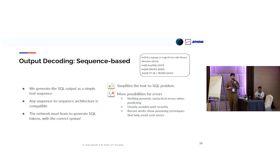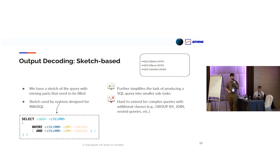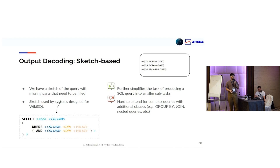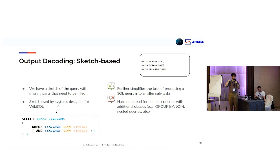Another type of decoder is a sketch-based decoder. In this case, we consider a predefined sketch of an SQL query that has different parts missing, and we fill these slots. This simplifies the problem because our network only has to make single predictions about, for example, which aggregation function to use and which column to put in each slot. But it is very hard to extend this approach to more complex SQL queries or queries on full relational databases, because it is difficult to design a sketch that would work in those cases.